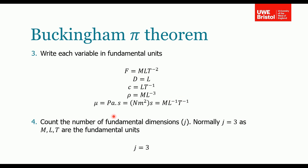Step four: count the number of fundamental dimensions. You can see that all these units have a combination of M, L, or T. So we've got three fundamental units — mass, length, and time — that can describe our independent and dependent variables, meaning j equals 3.